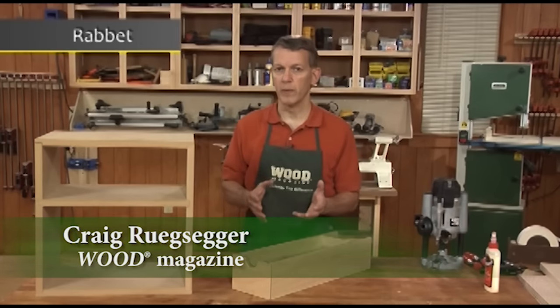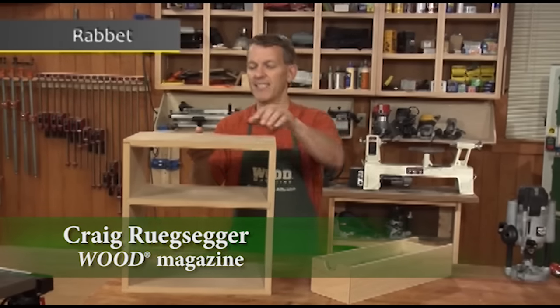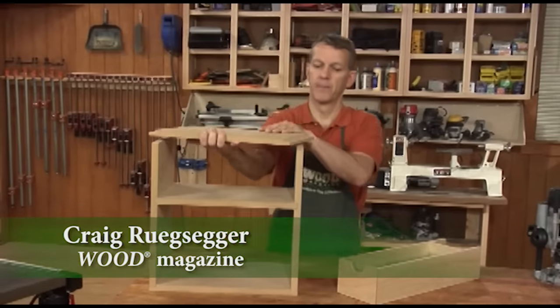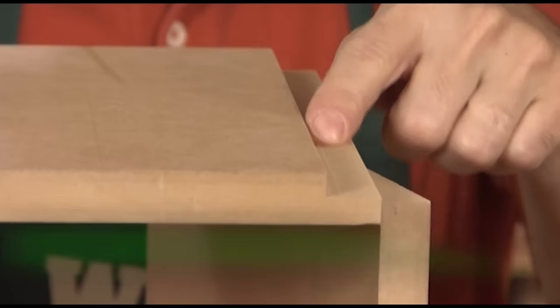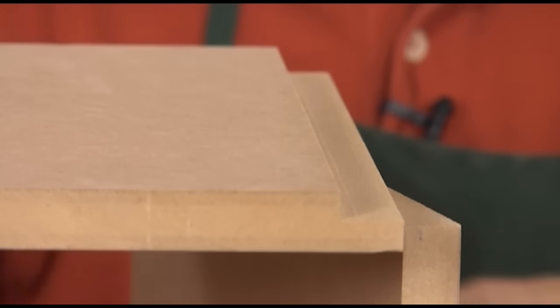A rabbet joint is really the simplest of the mechanical joints. A rabbet, and that's spelled with an E-T on the end, not an I-T like a little critter in your backyard, is simply a cut made along the edge or the end of a workpiece that accepts a mating piece.